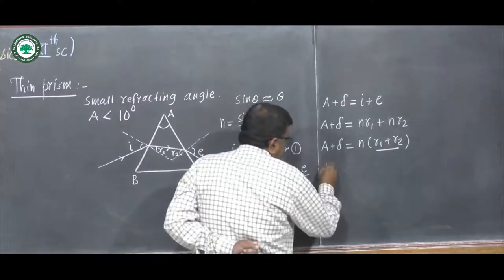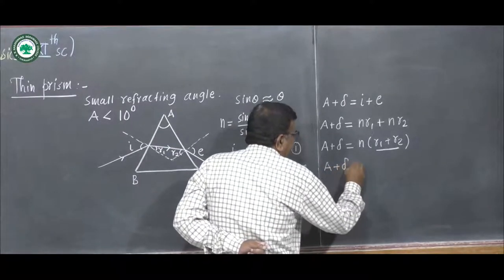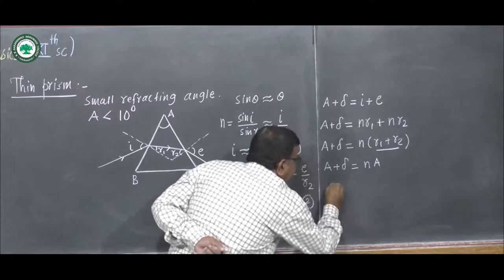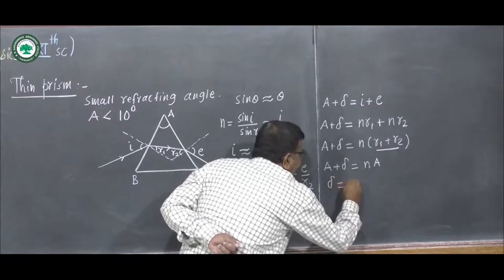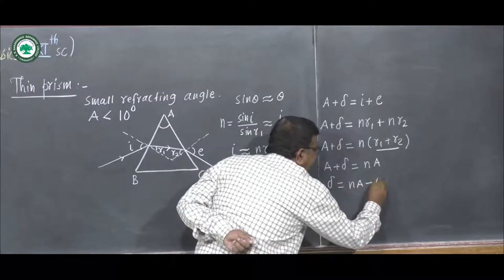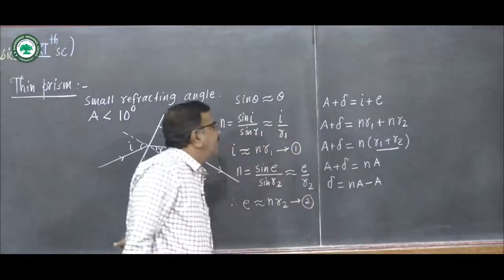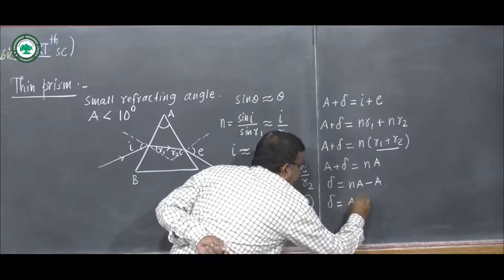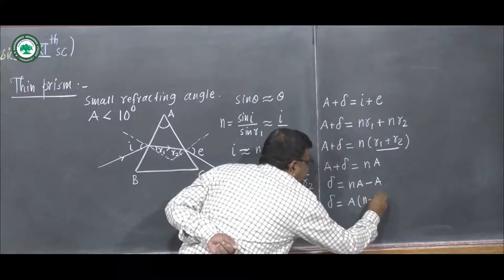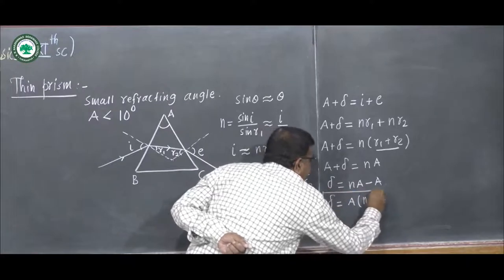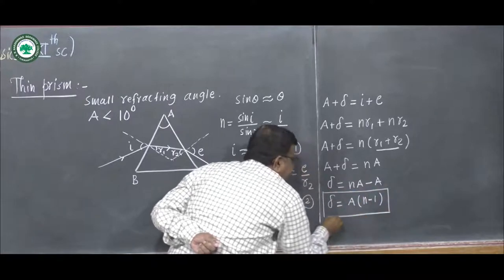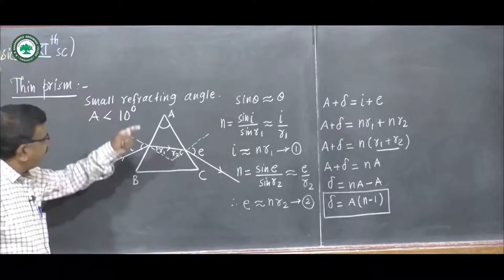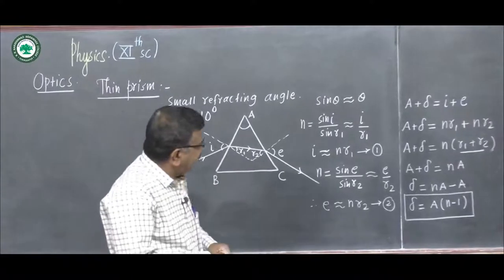Hence we write A + δ = n·A, so δ = nA − A. Taking A as common: δ = A(n − 1). This is a very important relation for deviation through a thin prism — a prism having a small refracting angle, less than 10 degrees.